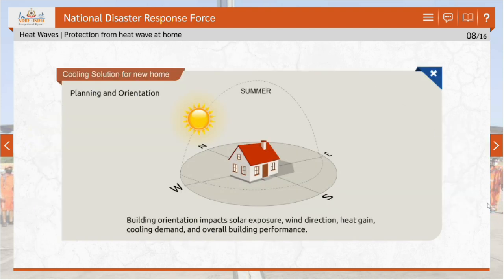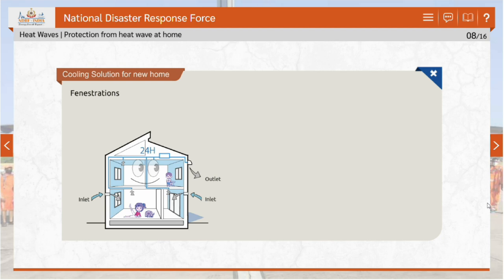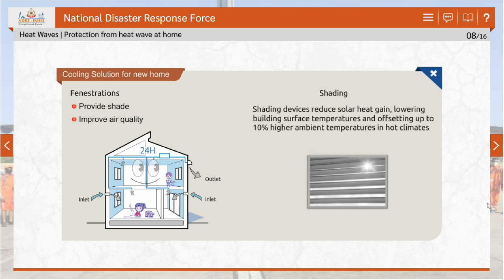Orientation of the building plays a crucial role with respect to solar exposure and wind direction, affecting heat gain through the building envelope and the cooling demand. Fenestrations — properly oriented doors and windows — when open provide natural cross ventilation; more cooling can be obtained if air is forced to take the longer path between inlet and outlet. Shading devices are an effective means of cutting down on solar heat gain, reducing external surface temperatures which can easily reach up to 10% higher than ambient temperatures in hot climates.